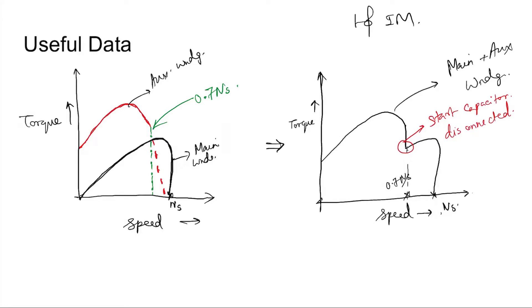The main winding, if it is only having the main winding, that is the motor, then the torque speed characteristics will be like this. Starting torque will be 0 and then, at synchronous speed, it will again have 0 torque.